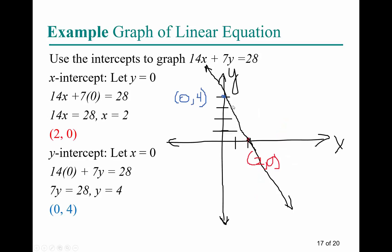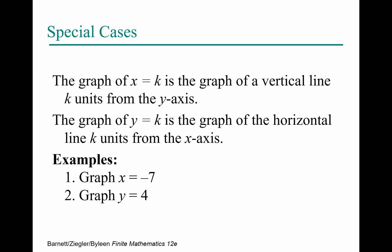For 14x + 7y = 28, note that 28 is a multiple of both 14 and 7. For the x-intercept, set y = 0: 14x = 28, so x = 2, giving the x-intercept (2, 0). For the y-intercept, set x = 0: 7y = 28, so y = 4, giving the ordered pair (0, 4). Plot the line to get the graphic representation of 14x + 7y = 28.